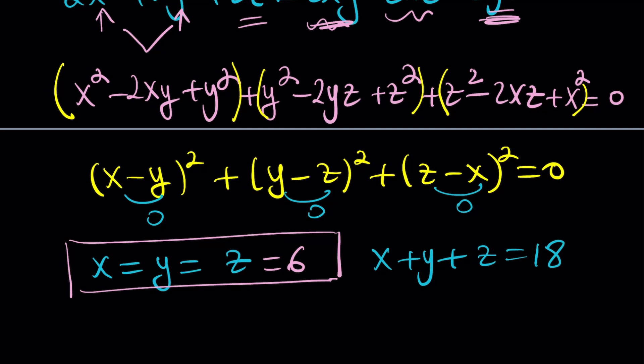But wait a minute. Can x, y, z be negative 6? No. Because it doesn't satisfy the first equation. And system means both equations have to be satisfied. Make sense? I hope it does.